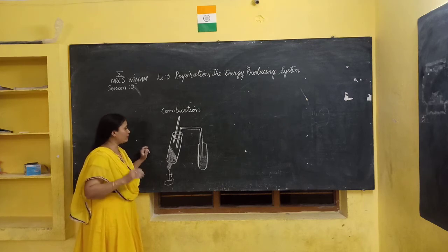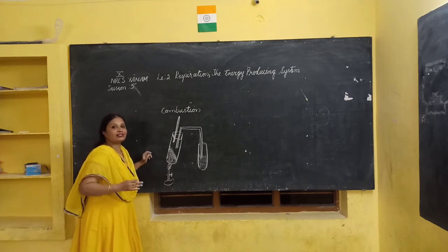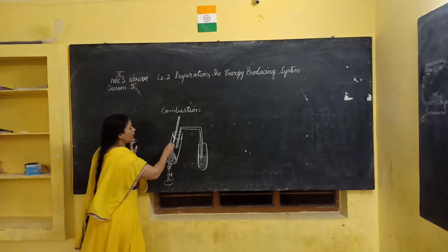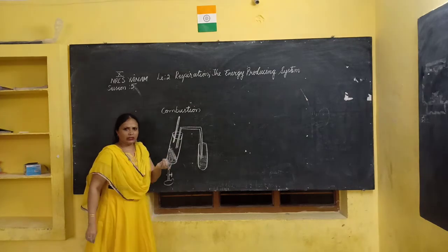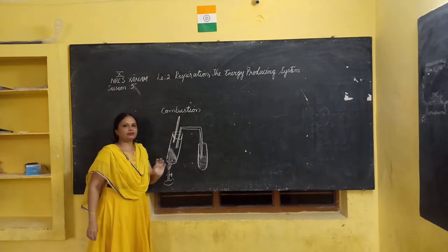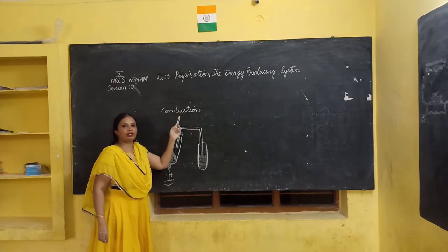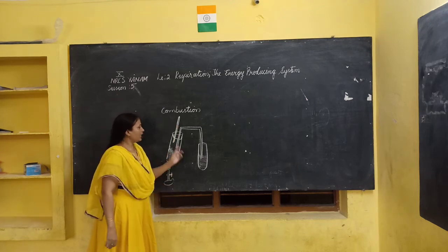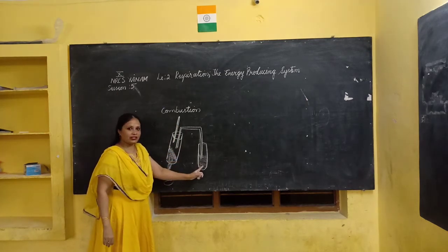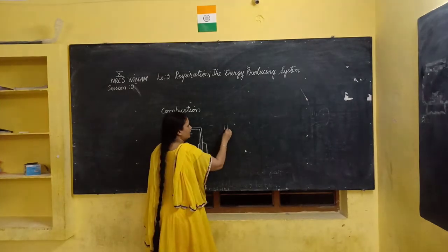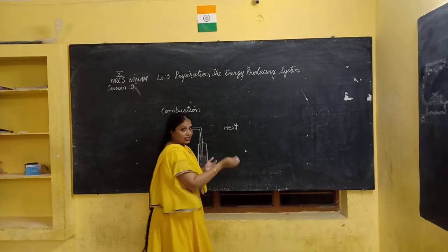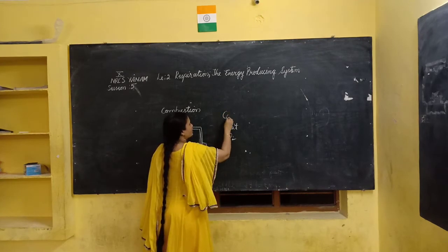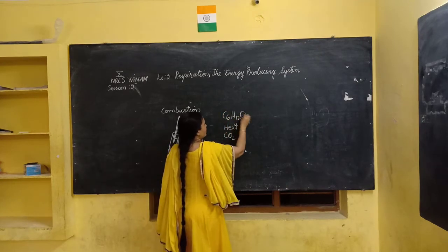It becomes bluish black. So in combustion, the sugar becomes charred. But in our body it does not become black. And after some time, suddenly the heat increases — the temperature on the thermometer shows very high. And then carbon dioxide is released, heat energy is produced, and the glucose is burnt.